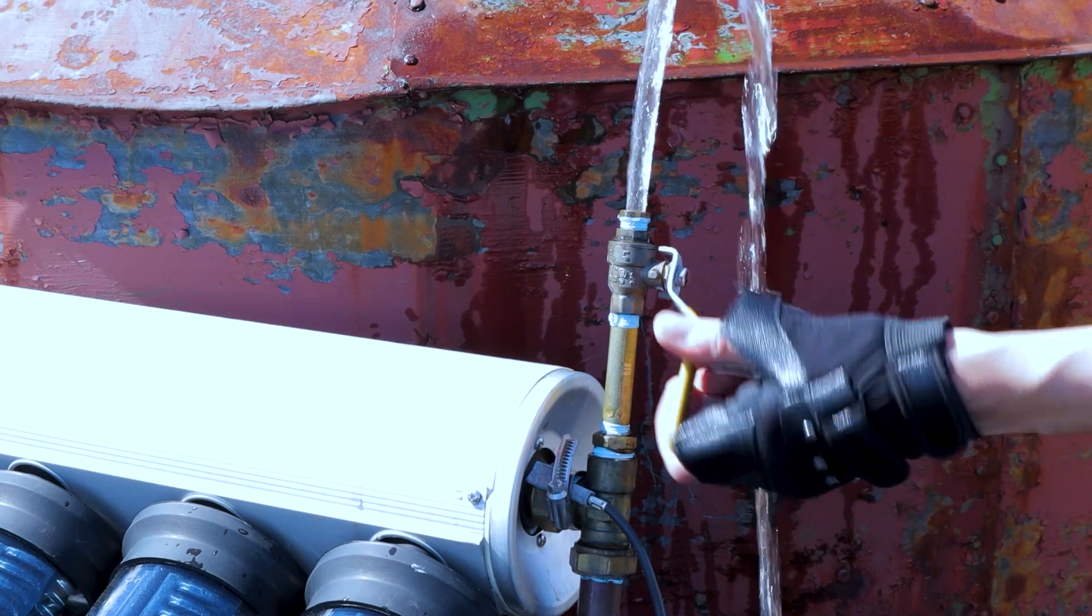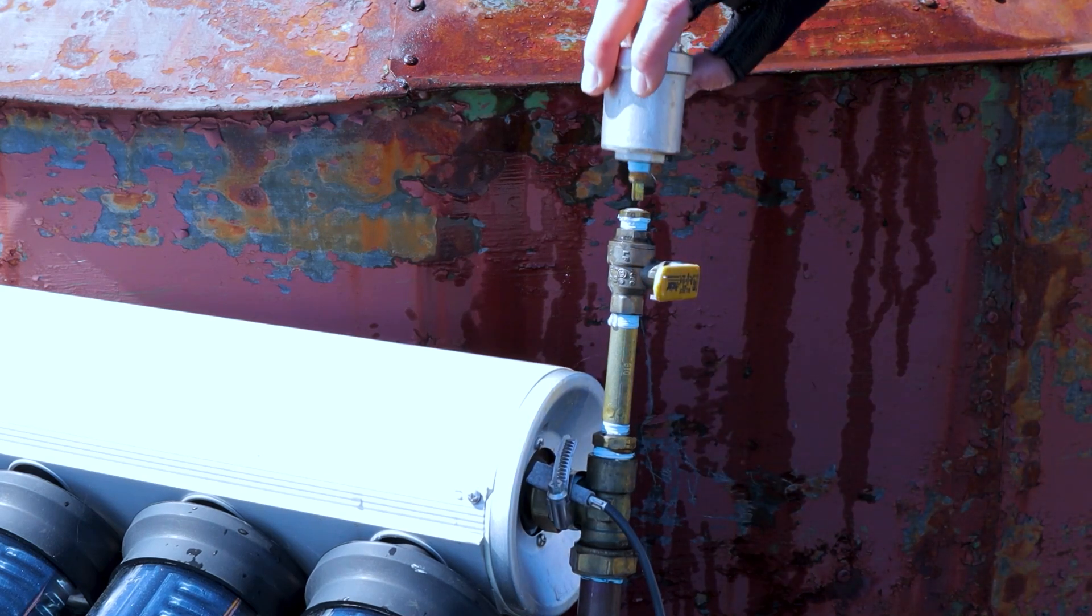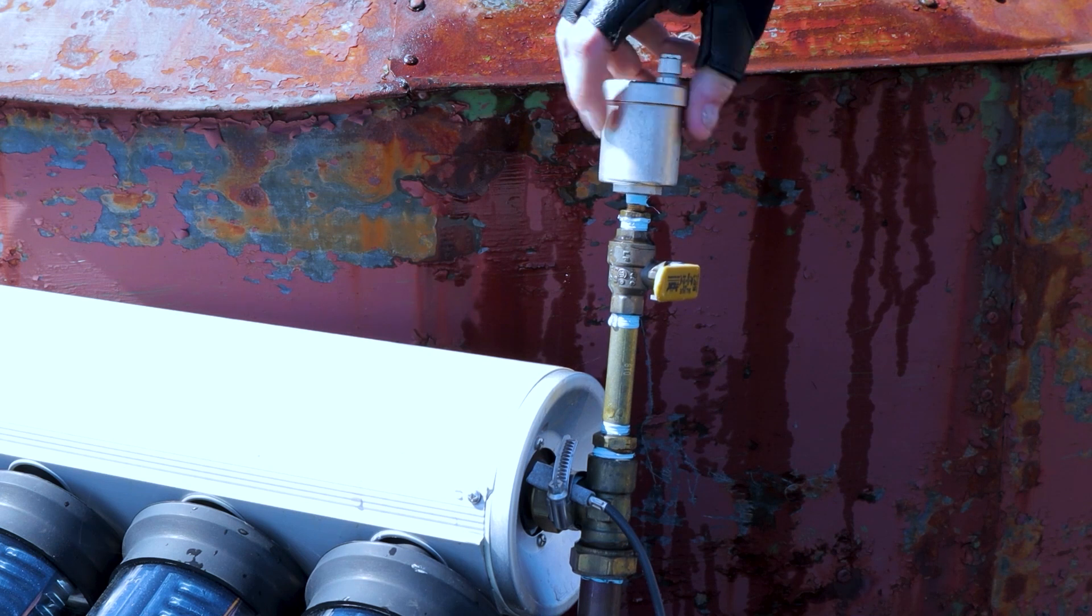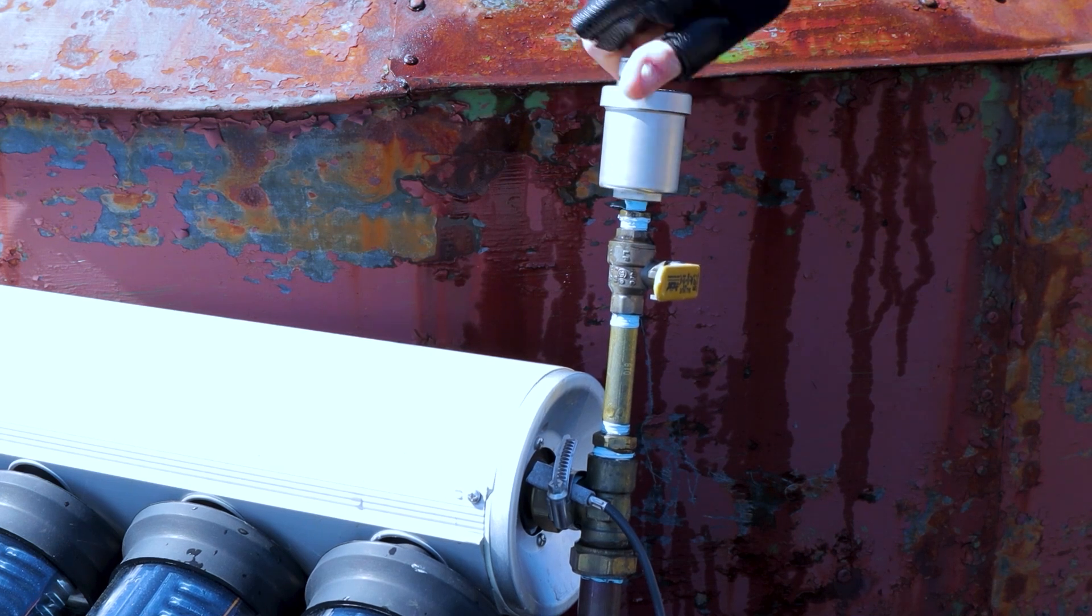Now that the water is running clean and the system is full, we can shut the flow of water and install the air bleed valve, which allows air to go out but not water. Pretty nifty!